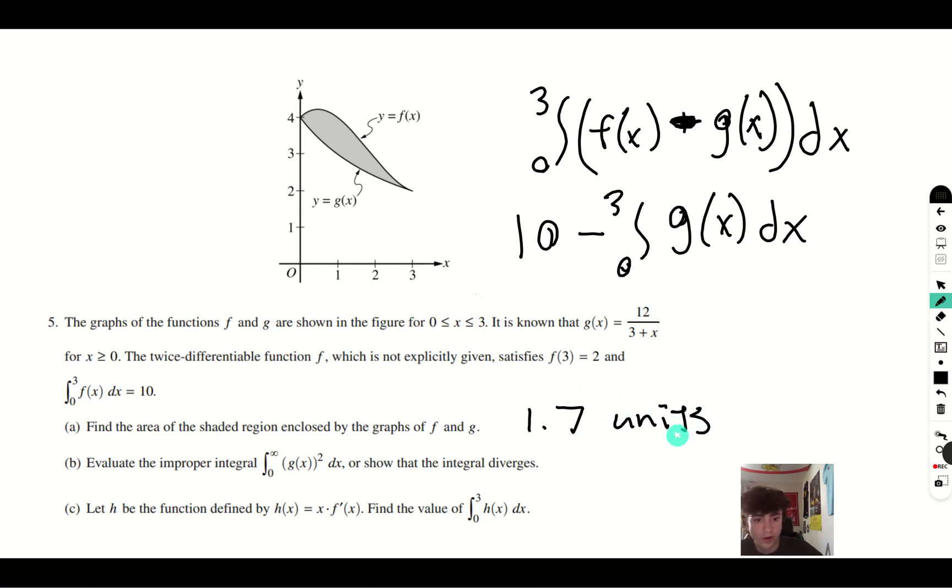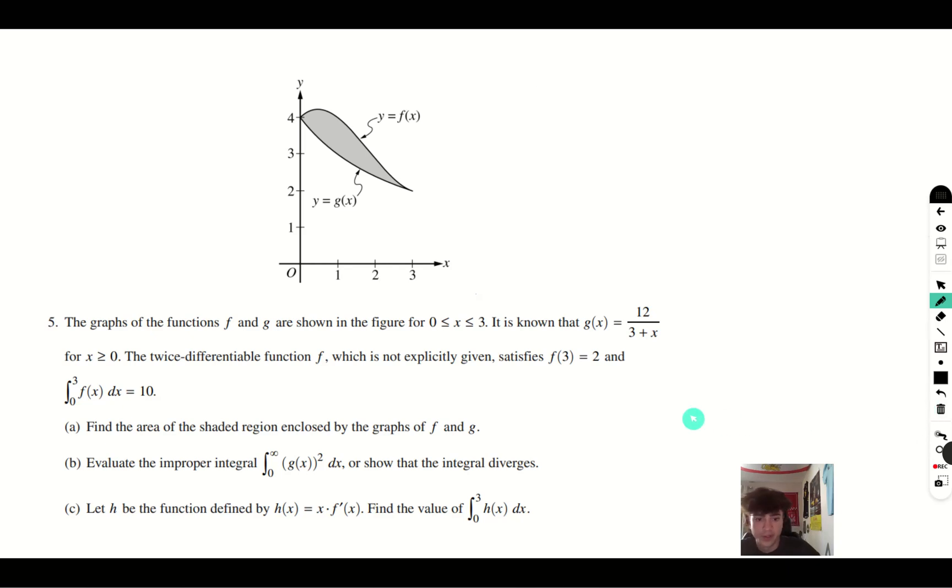Let's move on to part b, which asks us to evaluate the improper integral from 0 to infinity. G of x squared gives you 144 over 9 plus 6x plus x squared. Using the p-series test, we can see that the variable with the highest exponent is x squared. And since 2 is greater than 1, therefore we know that the integral converges.